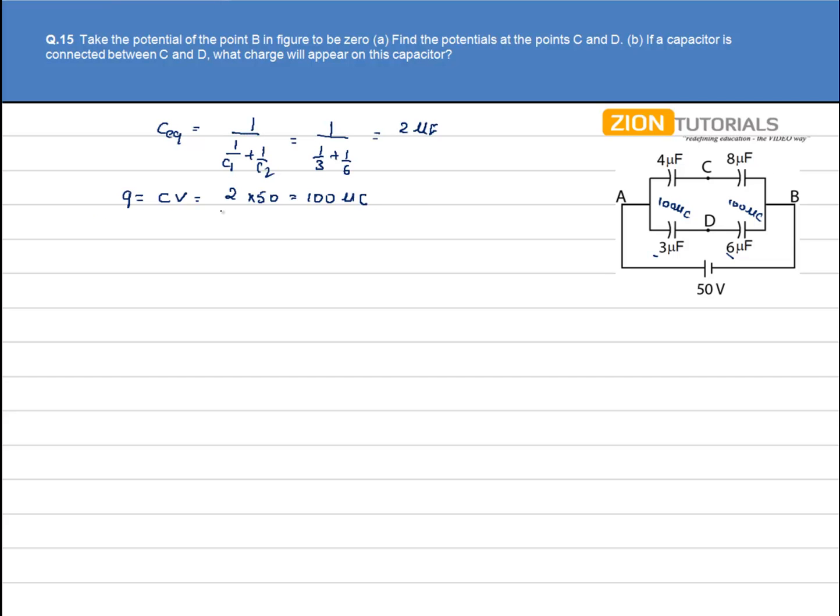Let us say the potential drop across the capacitor 6uF is calculated by Q by C. This is the potential drop across 6uF and that is equal to Vd minus Vb. Q is 100, capacitance is 6. That is Vd since Vb is equal to zero. The potential at point D comes out to be 50 by 3 volts.